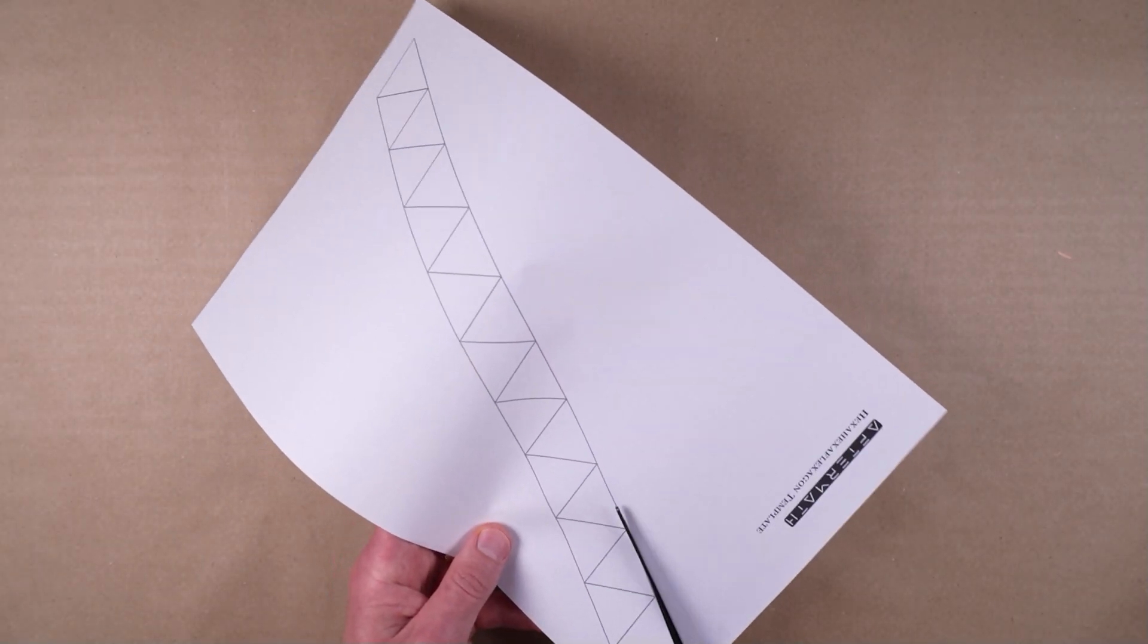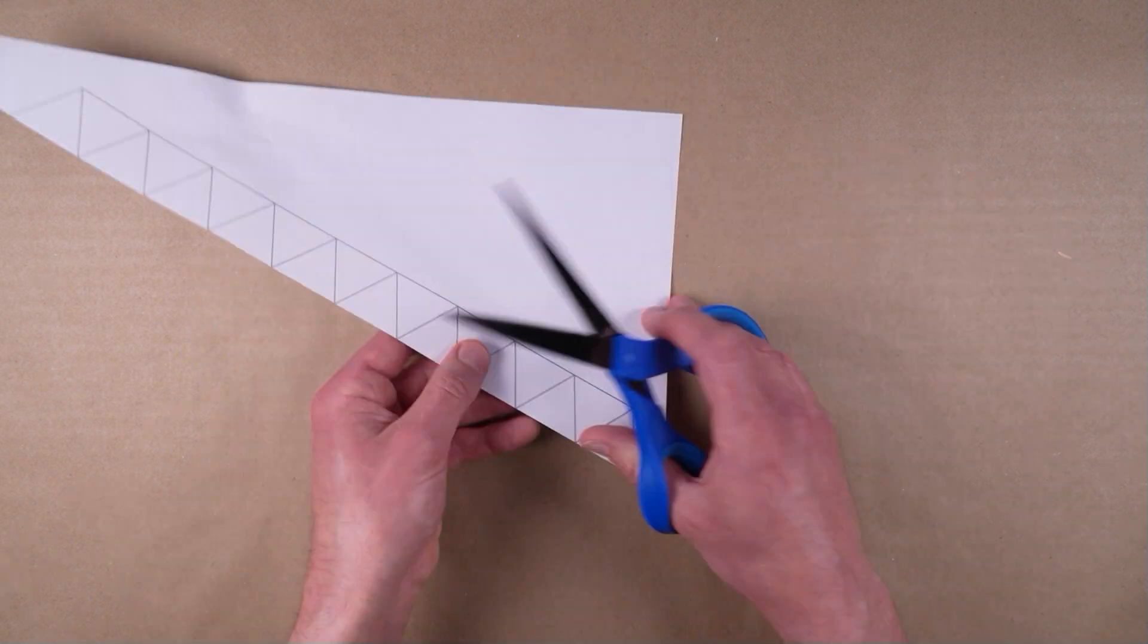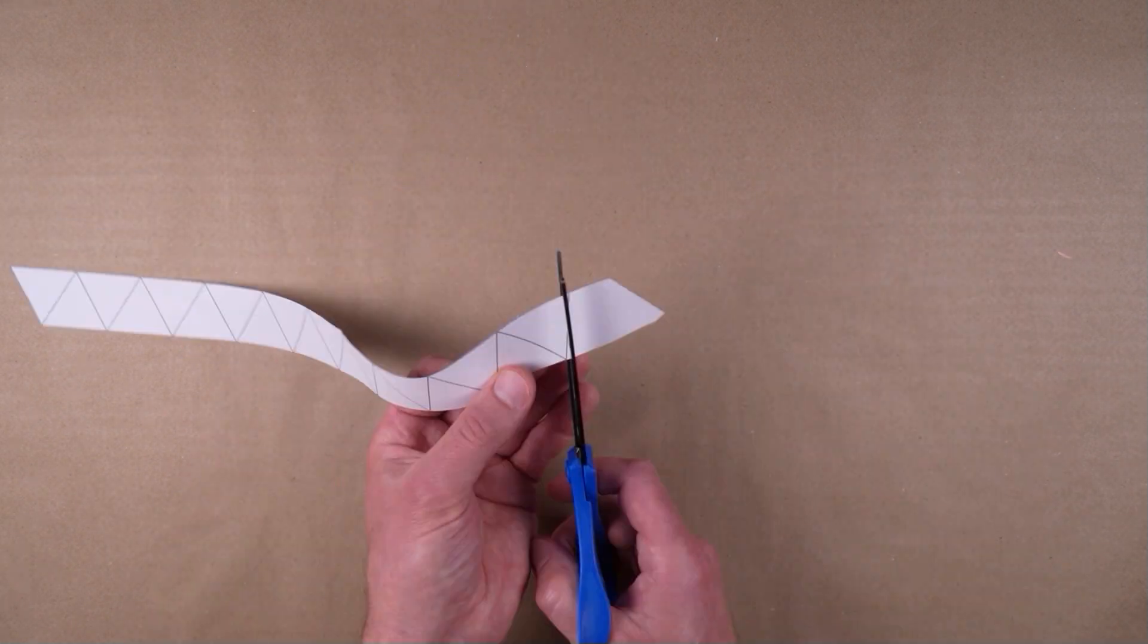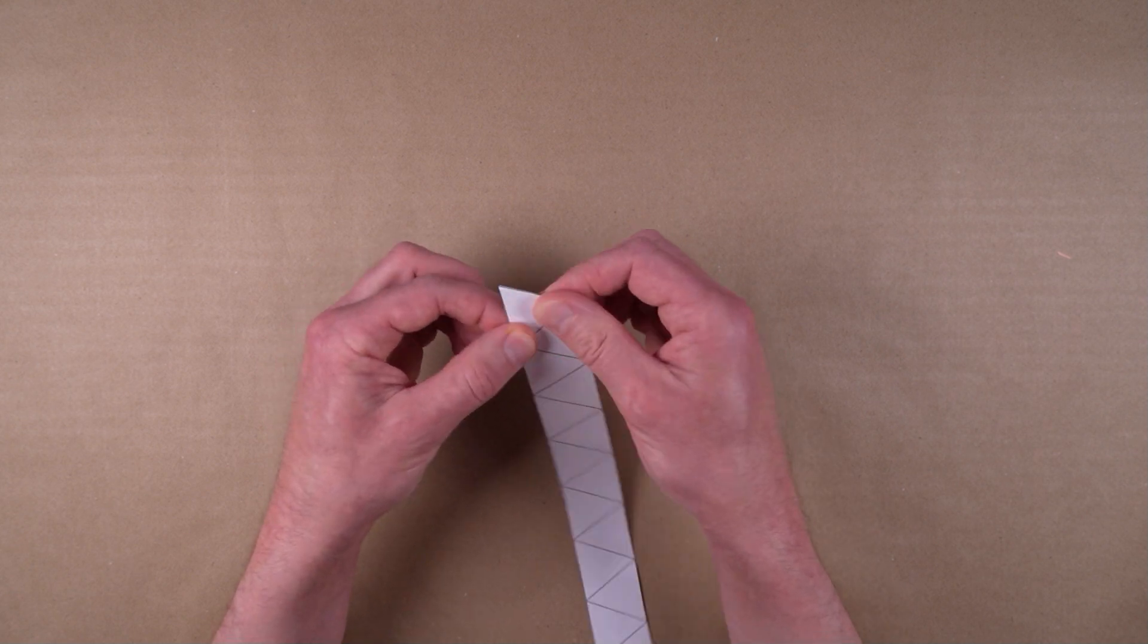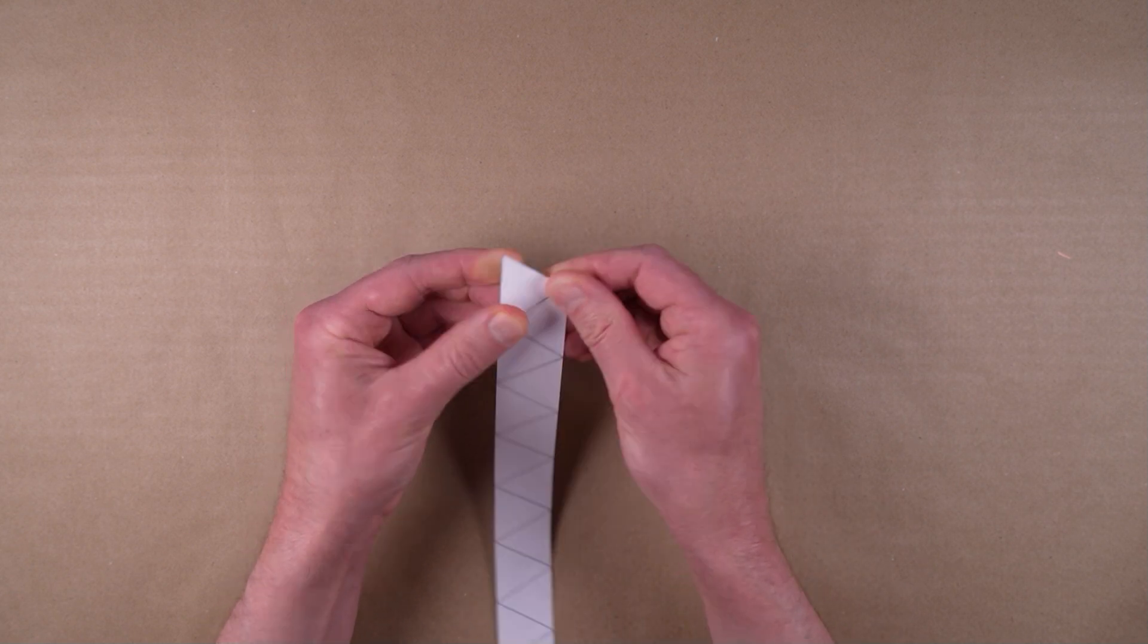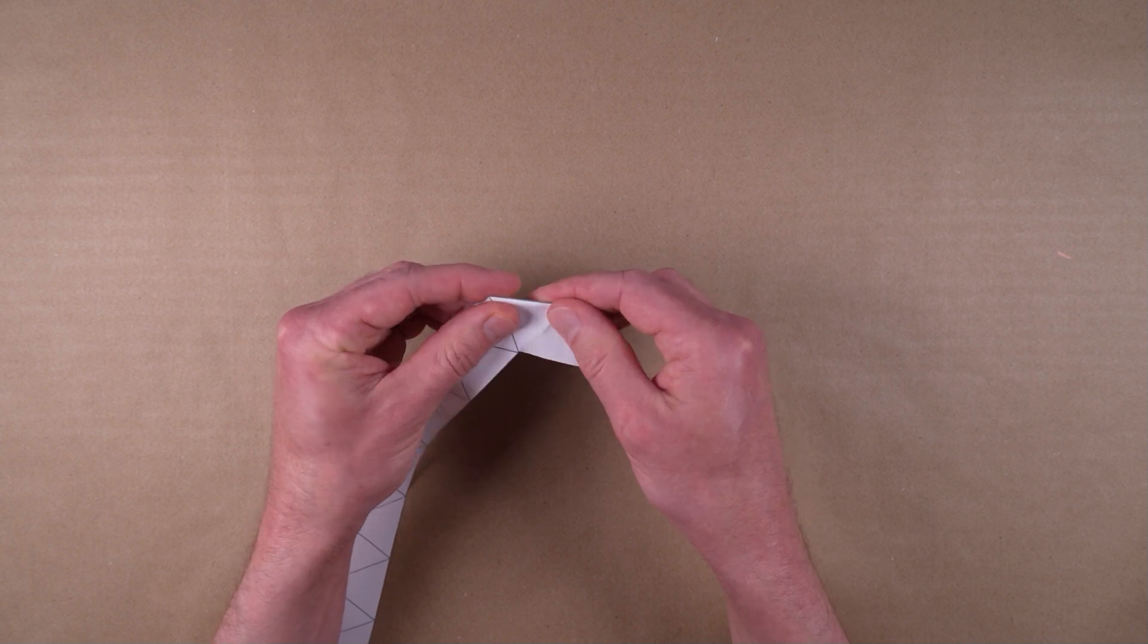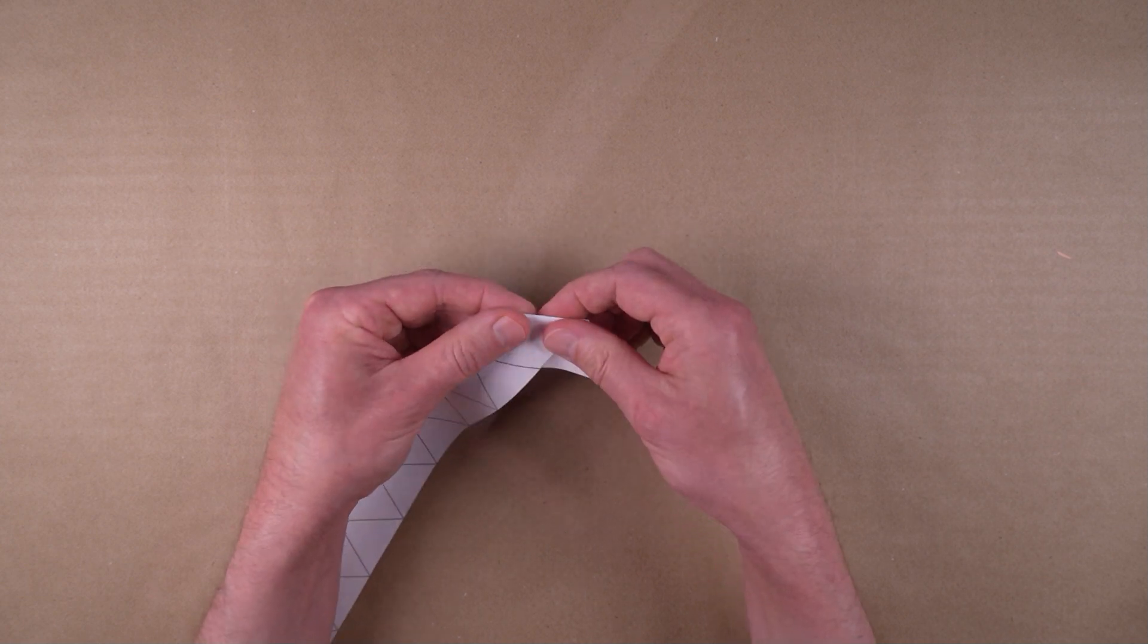Carefully cut out the strip containing 19 triangles. Fold back and forth along the inside printed lines to create a crease along each triangle's edge, which will make it easier to work with the hexaflexagon later.